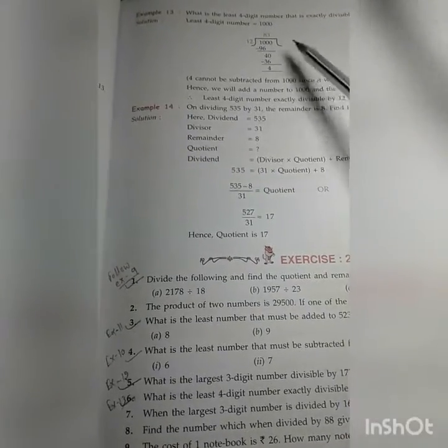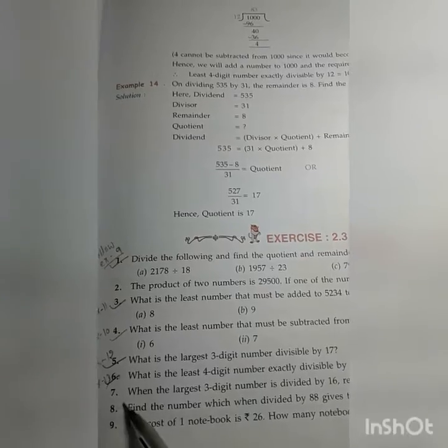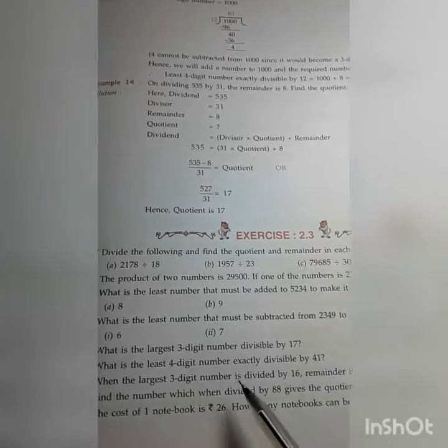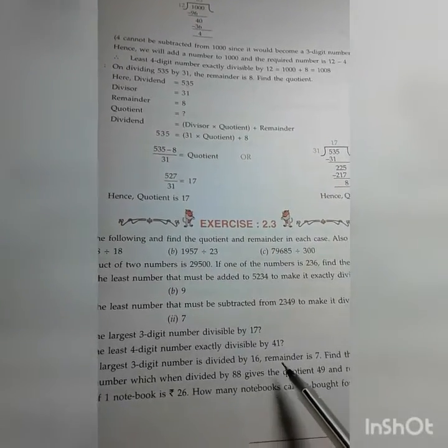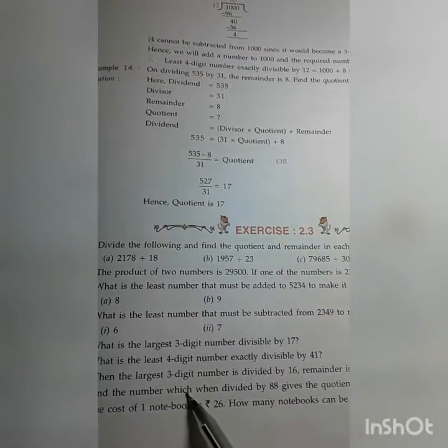Here example 13 is given. You see. Then comes to number seven. When the largest three-digit number is divided by 16, remainder is 7. Find the quotient. Here children,